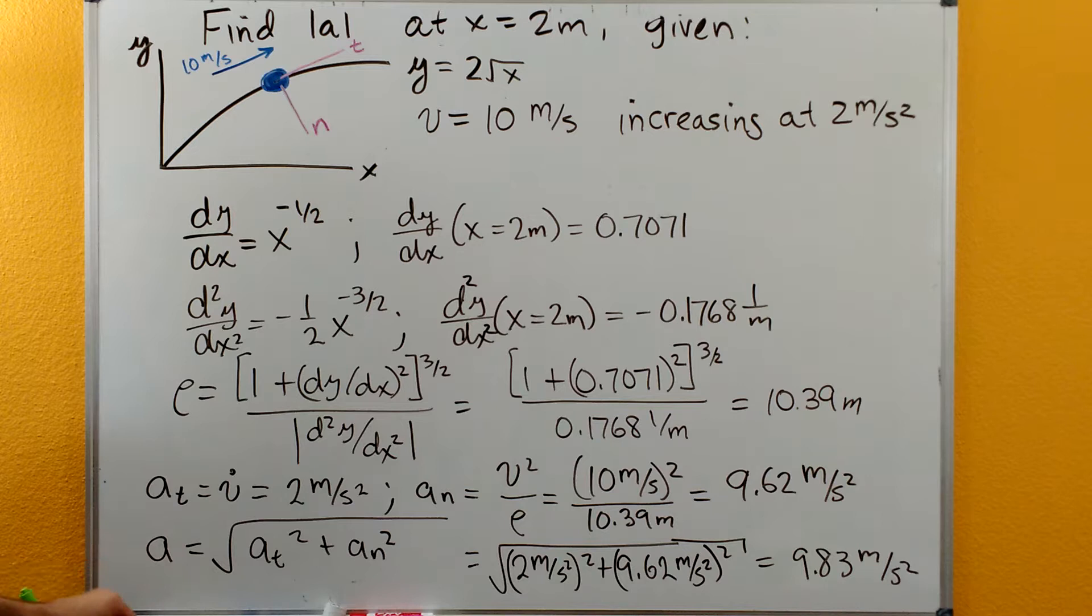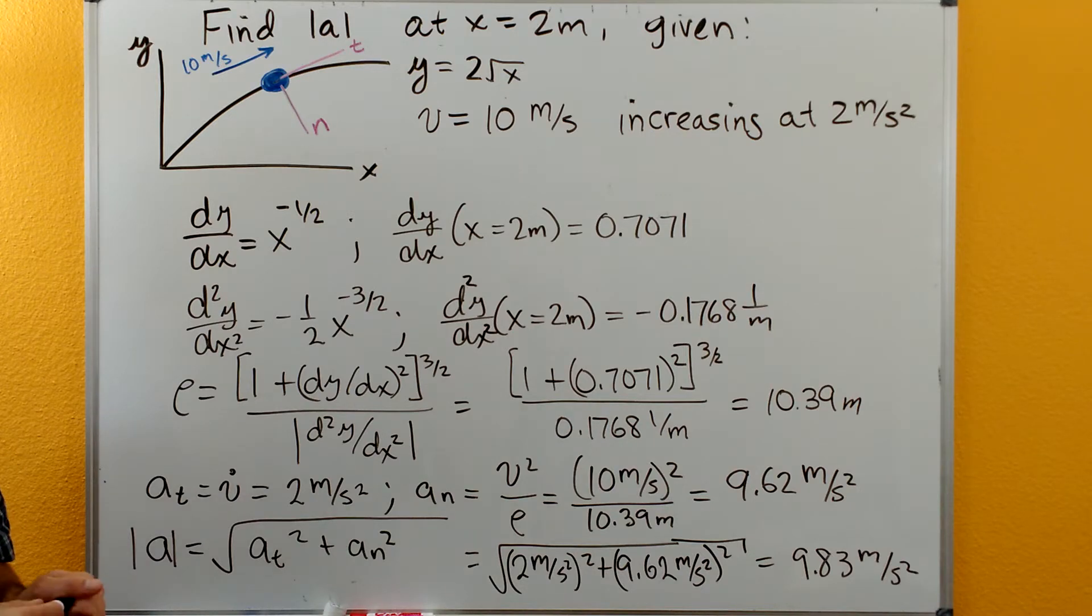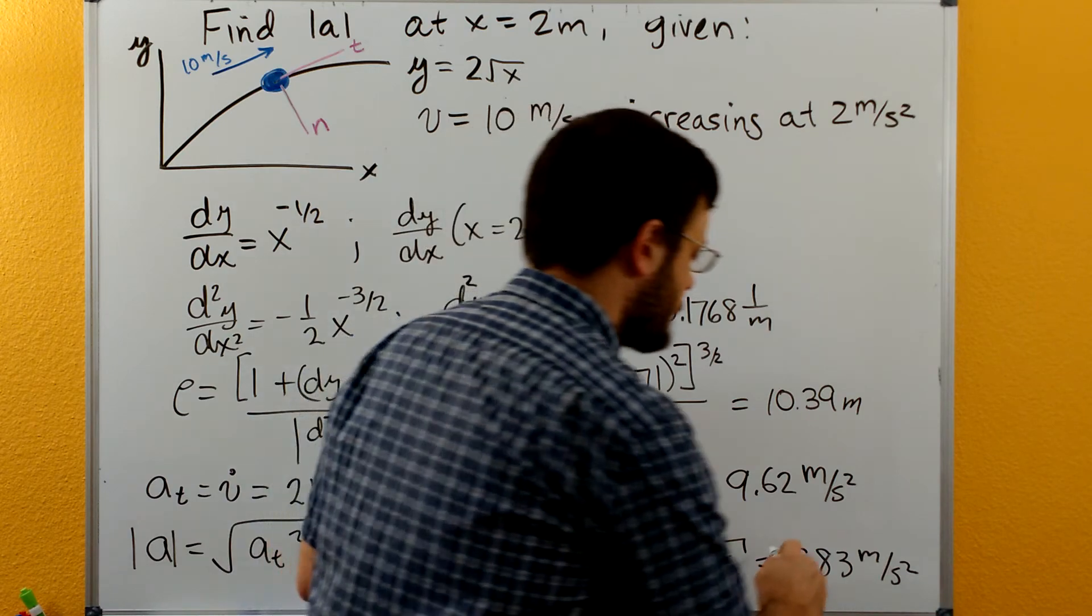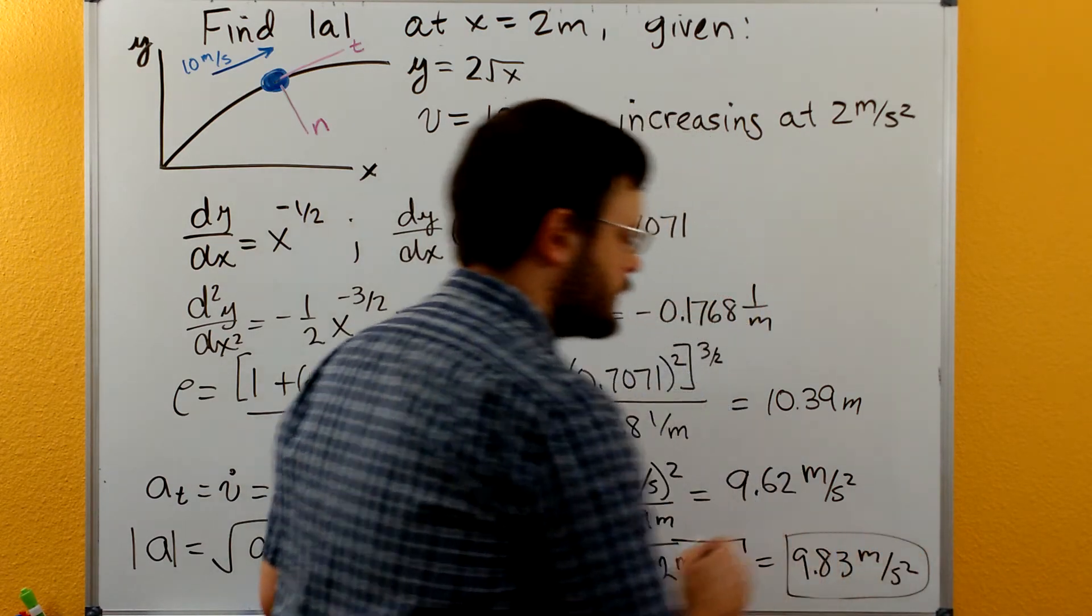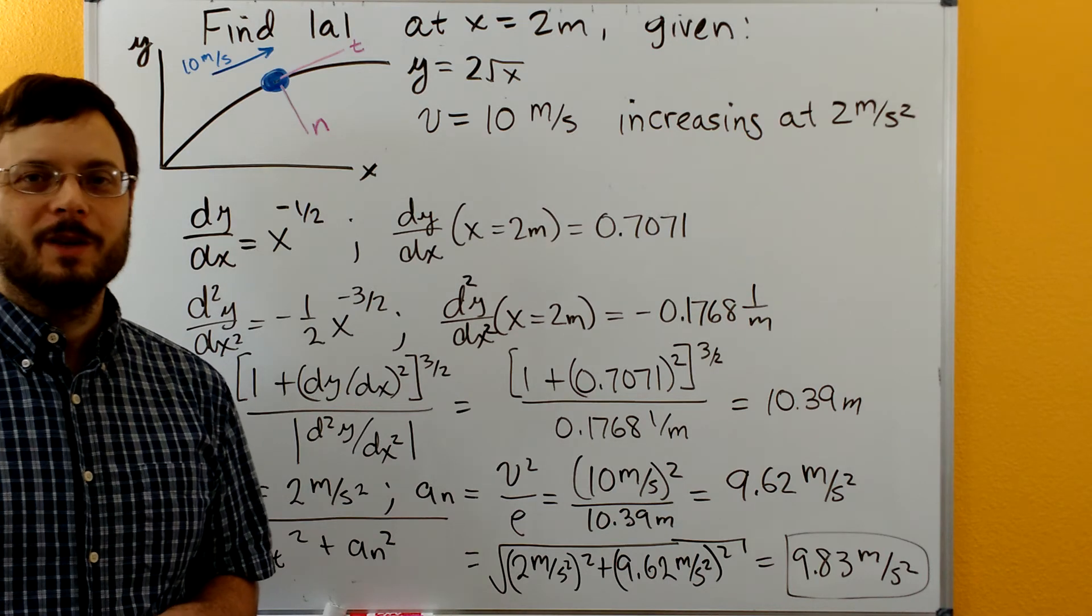So we can calculate the magnitude of our acceleration here just by taking both components, squaring them, adding them together, taking a square root, and when we do that, we get that our total acceleration is 9.83 meters per second squared. Thanks for watching!